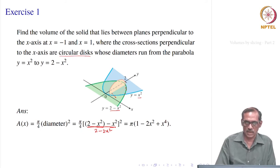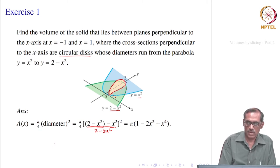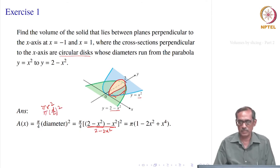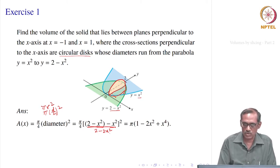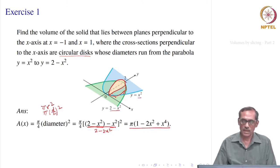The area of the disc is equal to π into diameter squared divided by 4. So the cross sectional area A(x) = (π/4)(2 − 2x²)², which simplifies to π(1 − 2x² + x⁴). So once this is achieved, it will be easier to compute the volume just by the formula: Volume = ∫₋₁¹ A(x) dx.